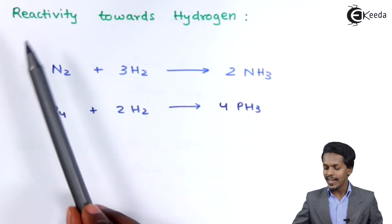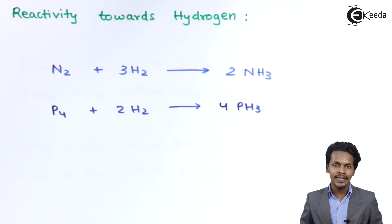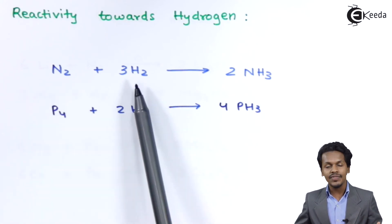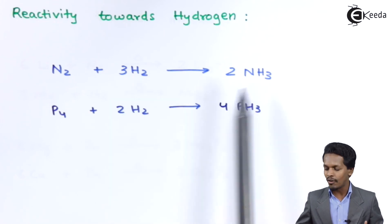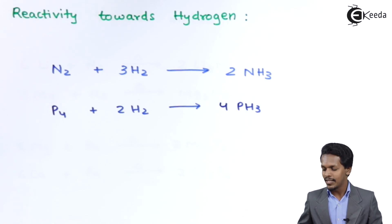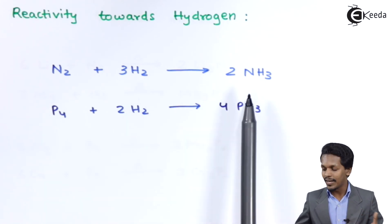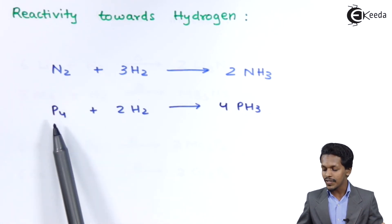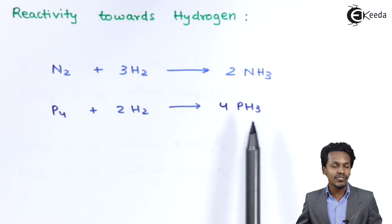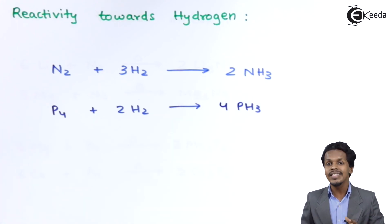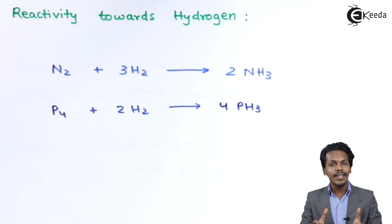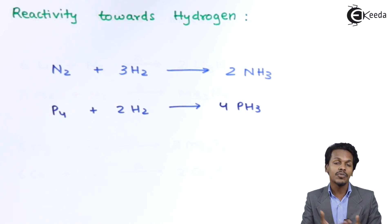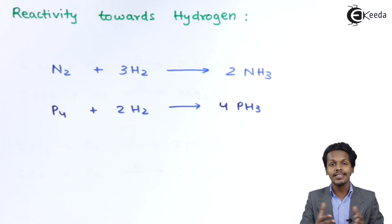The next reaction is the reaction of hydrogen with group 15 elements. Nitrogen reacts with hydrogen to form ammonia — 2 moles of NH3 — requiring a catalyst and certain temperature. Phosphorus reacted with hydrogen produces phosphine, PH3. Not only NH3 and PH3, but other hydrides can also be produced, for example stibine and bismuthine. This is the reaction of hydrogen with group 15 elements to produce the corresponding hydrides.